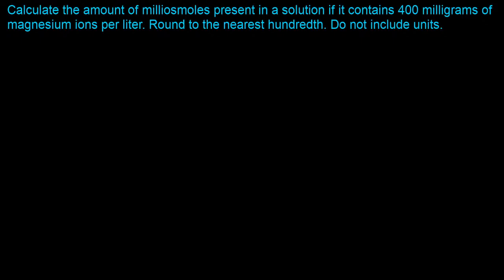The question says: calculate the amount of milliosmoles present in a solution if it contains 400 milligrams of magnesium ion per liter; round to the nearest hundred, do not include units. When we talk about osmolarity, they could ask you to calculate osmolarity, but here it asks for milliosmoles. Since information is given per liter, this is effectively asking about osmolarity — milliosmoles per liter. So the equation is: milliosmoles per liter = (grams per liter ÷ molecular weight) × number of particles × 1000.